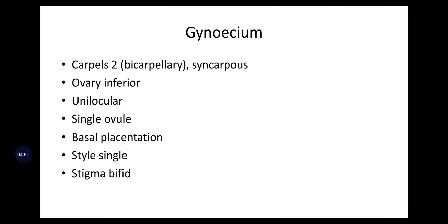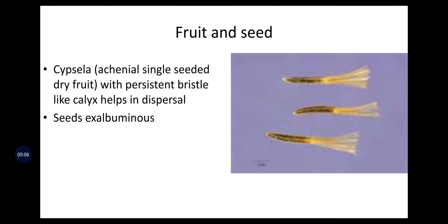Gynoecium: two bicarpellary syncarpous carpels. Ovary is inferior, unilocular, single ovule, basal placentation, style single, and stigma bifid. The fruit is cypsela, that is an achenial single-seeded dry fruit. Achene is also another pronunciation. With persistent bristle-like calyx it helps in dispersal. Seeds are exalbuminous.